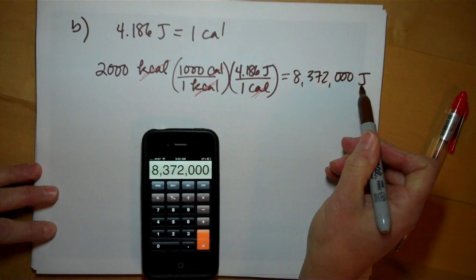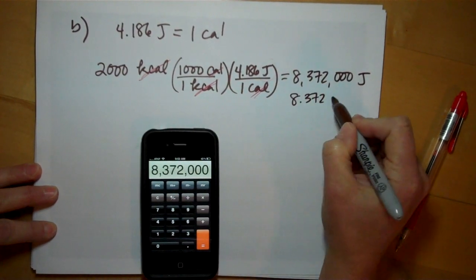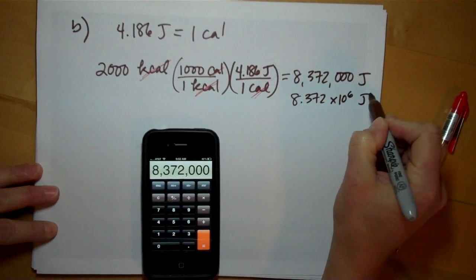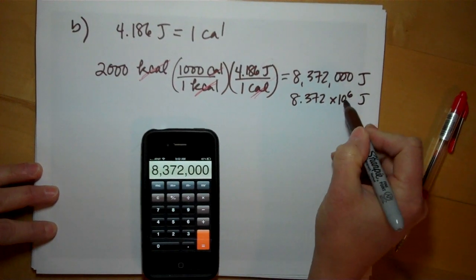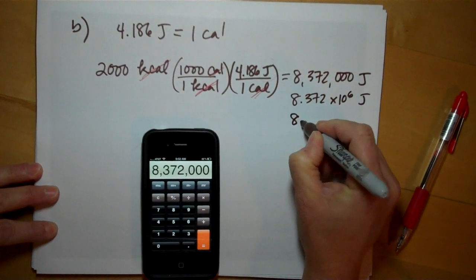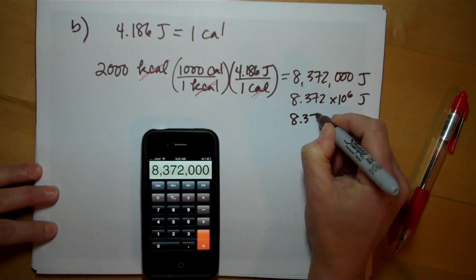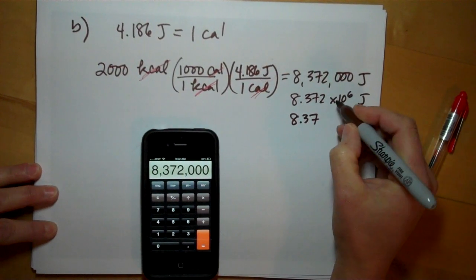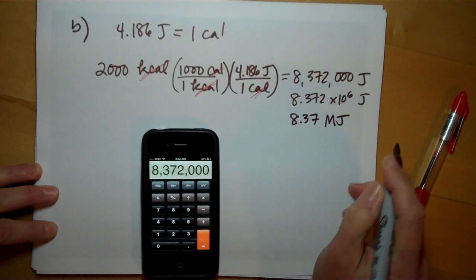You can see this is 8.372 times 10 to the 6 joules. 10 to the 6 is mega, so this is 8.37 mega joules of energy. I probably shouldn't use so many significant figures.